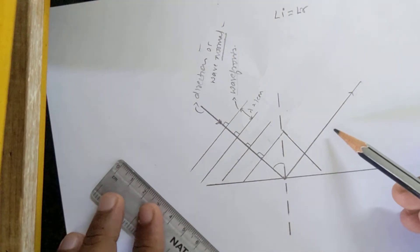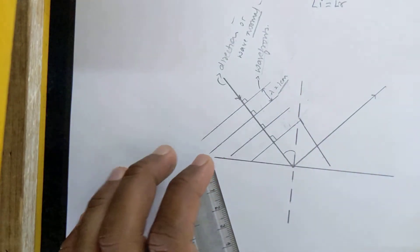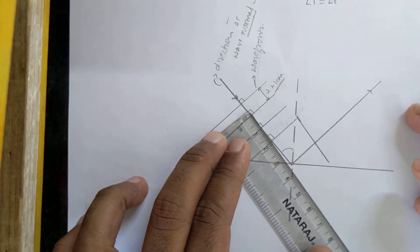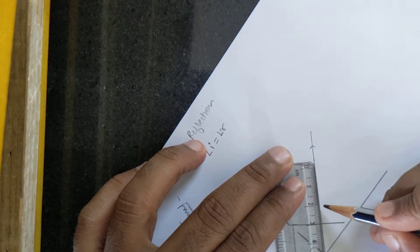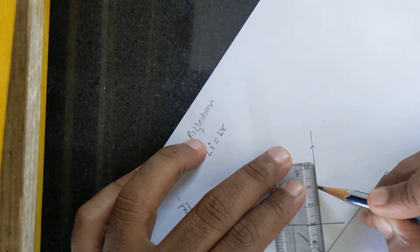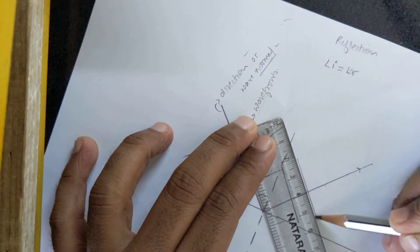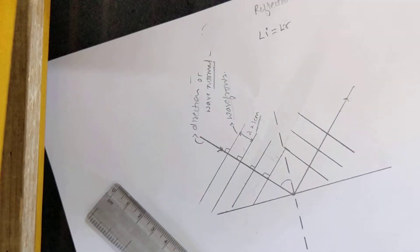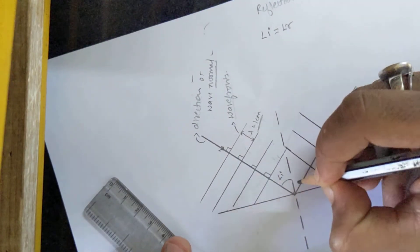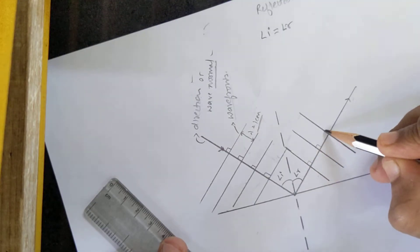Remember, wave fronts are perpendicular to the wave normal, so if I adjust my ruler properly so that it is perpendicular to the line, this is going to be my first wave front. To draw the second wave front, you need to measure the wavelength — it is already one centimeter. From here, I keep marking one centimeter intervals. So one, one — and you draw the new positions of the reflected wave fronts. The angle of incidence and angle of reflection are marked, and these are my reflected wave fronts, perpendicular to the wave normal.